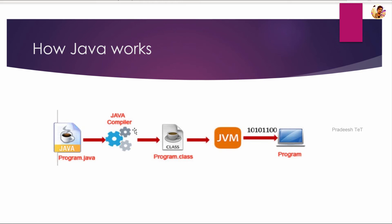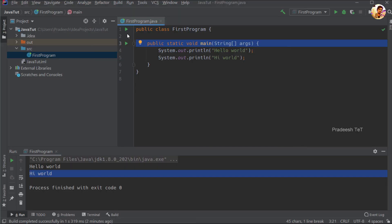We learn how the machine language works. We convert the program's class files into bytecode. Then we convert the bytecode using the JVM — Java Virtual Machine. The machine code is 0s and 1s. So step by step, we convert Java source code to bytecode to machine code.